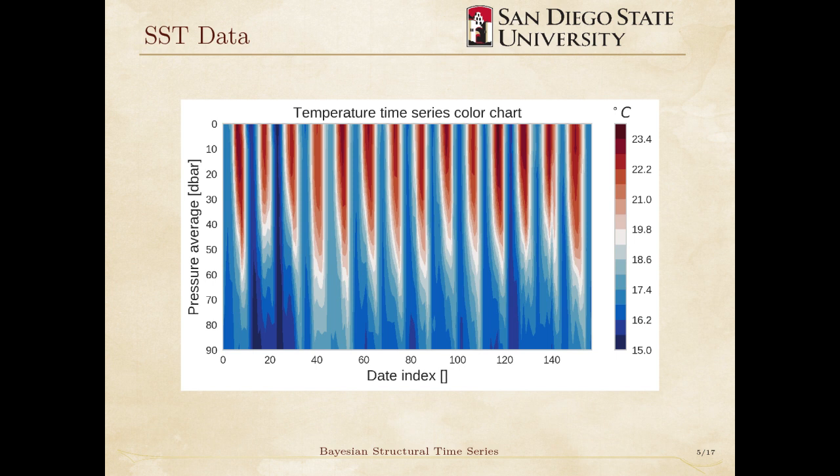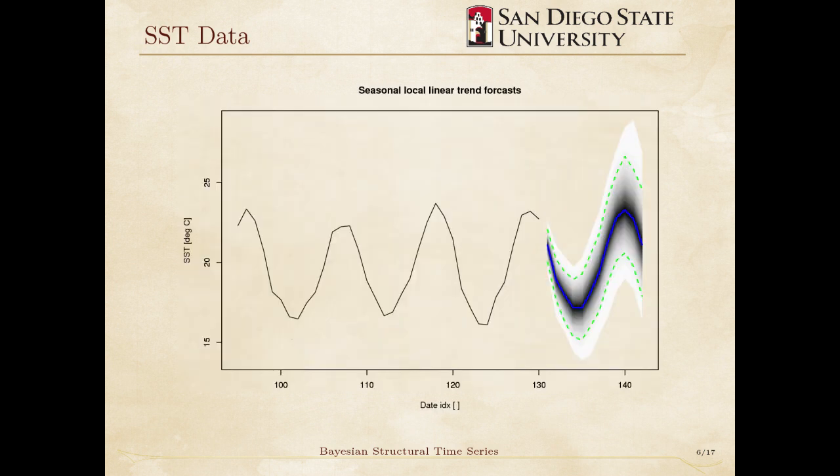We are going to build a regression model by setting sea surface temperature as our output, y, and our underlying layers as our input, x. We have already modeled a single variable time series in our last encounter. A local linear seasonal time series gave us a good prediction. Perhaps regression will improve things.